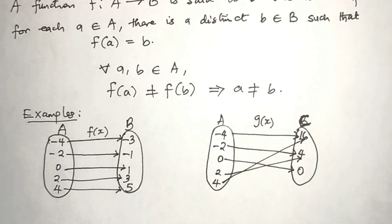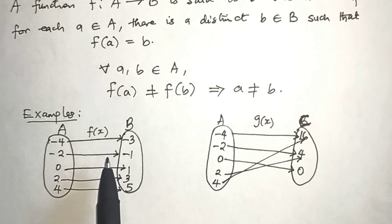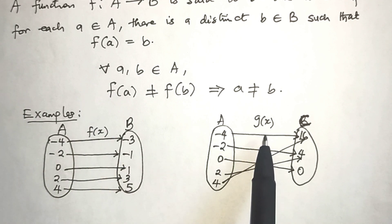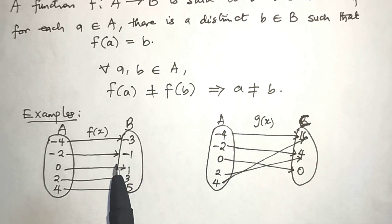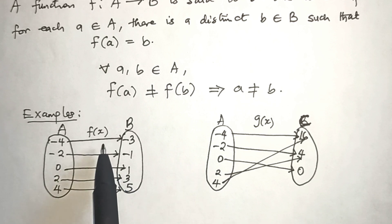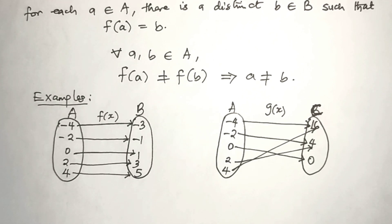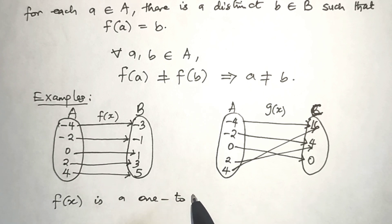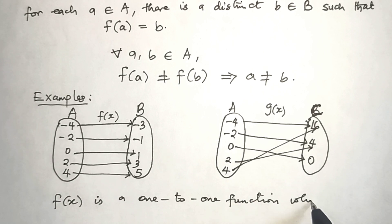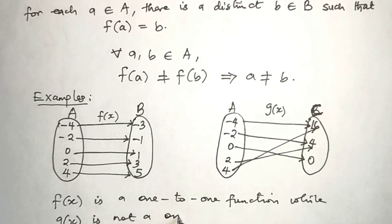Among these two functions f(x) and g(x), the one that is one-to-one is f(x), while g(x) is not a one-to-one function. The reason is that no two different elements have the same image in f(x), so we say f(x) is one-to-one, while g(x) is not.